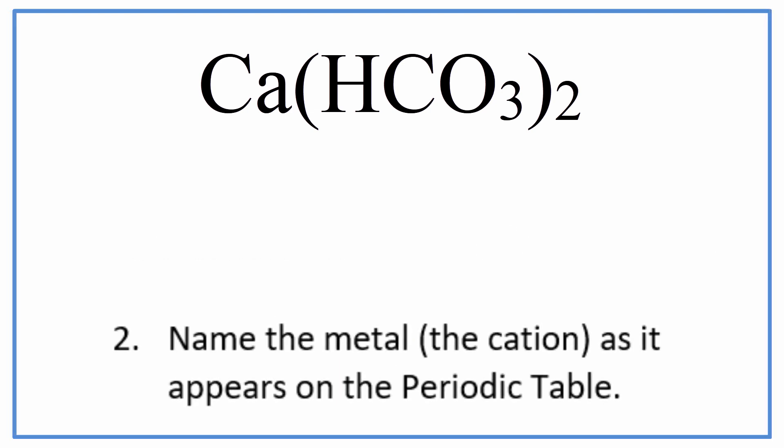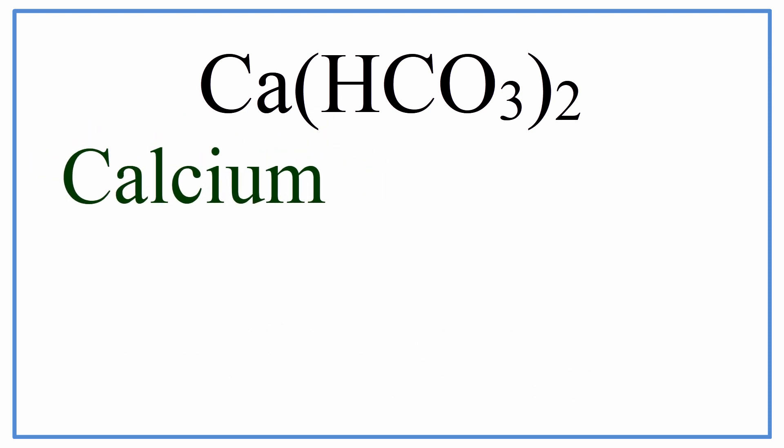Next, we write the name of the metal using the periodic table. For Ca, that's calcium, and that's the exact name we find on the periodic table.